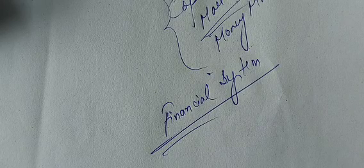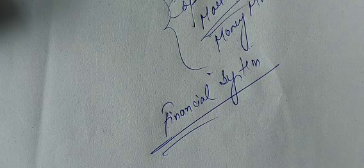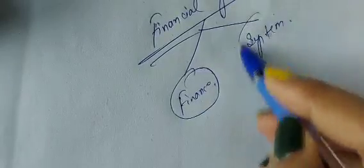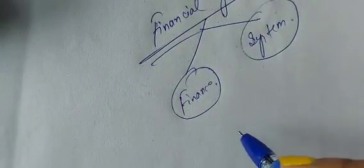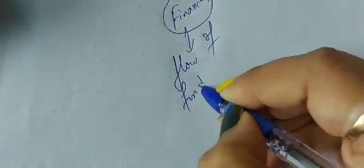Bengali students, you can purchase books in the Bengali version and write accordingly. So what is financial system? Financial system has come from two terms: one is finance and another is system. Finance means flow of fund — flow of fund from the surplus side to the deficit side.